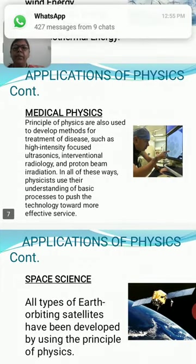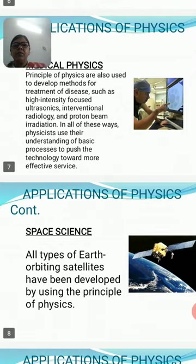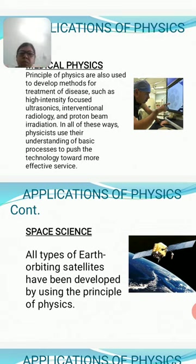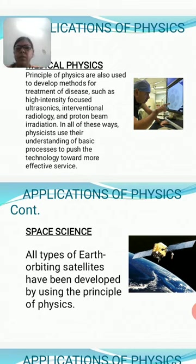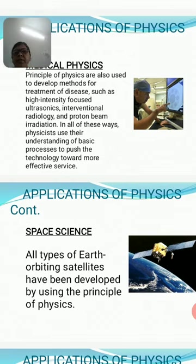In physics we also study planetary motions — how the motion of planetary bodies occurs. There are many laws related to it, such as Kepler's laws of planetary motion. All types of earth-orbiting satellites have been developed using the principles of physics.